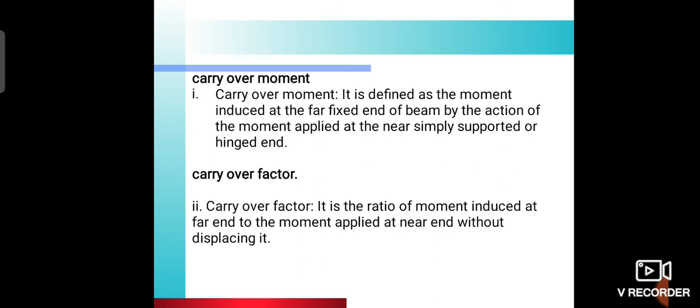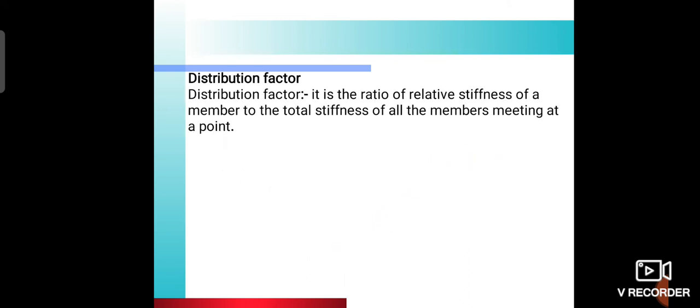Distribution factor: it is the ratio of relative stiffness of a member to the total stiffness of the members meeting at a point. Distribution factor is denoted by DF, so it is the ratio of relative stiffness factor k divided by summation of k.